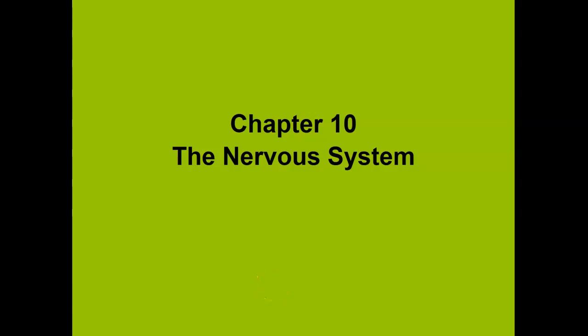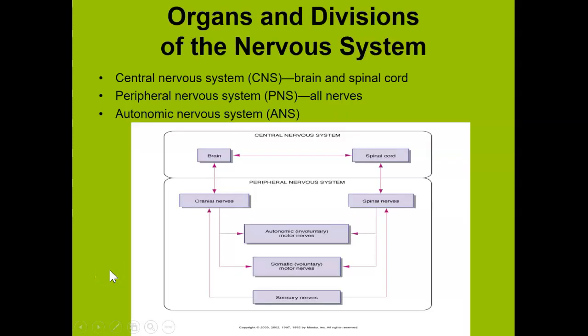Hello, Bio50. We are going to talk about the nervous system today, and I have to admit this is one of the chapters that I love the most. This is what my graduate degree is in, so let's have some fun. Love the brain. The nervous system is broken into two different divisions, the central and the peripheral. Now, the autonomic that you're seeing here, this third section, we'll get to that later.